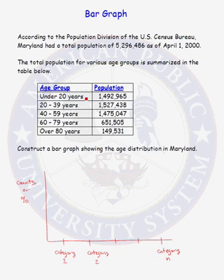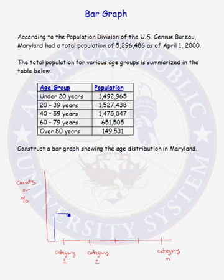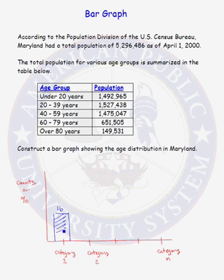we have five different categories: under 20 years of age, between 20 and 39 years of age, between 40 and 59, between 60 and 79, and over 80 years of age. In a bar graph, we calculate either the count or the percent of our variable in category 1, and we graph that as a rectangle centered over the middle of your label for category 1, and you label the top of it with the actual count — let's say the count was 16 — and you shade the rectangular region.